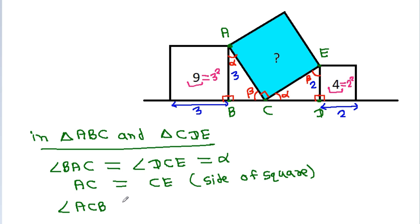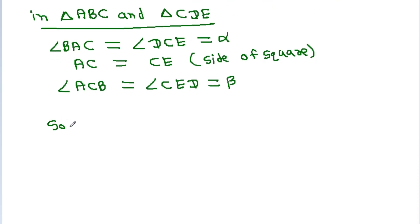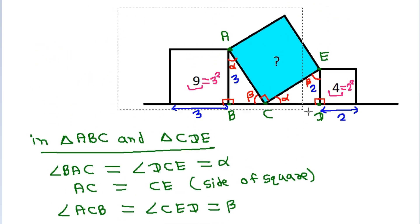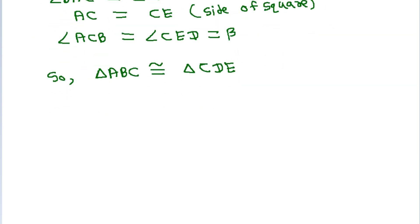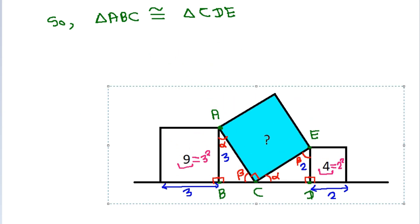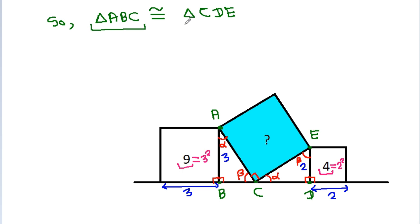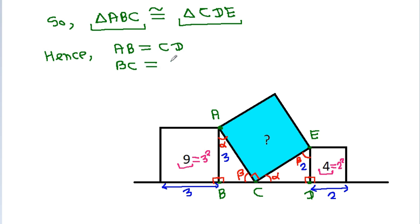Triangle ABC is congruent to triangle CDE. These two triangles are congruent. Hence, AB is equal to CD, and BC is equal to DE.